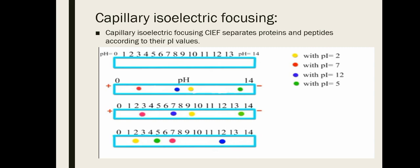The next mode is capillary isoelectric focusing. Capillary isoelectric focusing separates proteins and peptides according to their PI value. The isoelectric value means the pH at which a molecule has a net charge of zero. In this example, the yellow particle will be neutral at pH 2, red at pH 7, blue at pH 12, and green at pH 5.